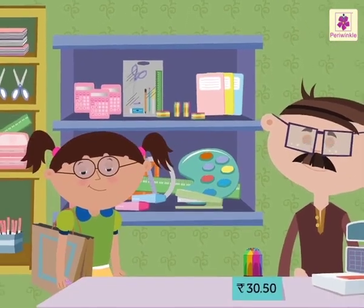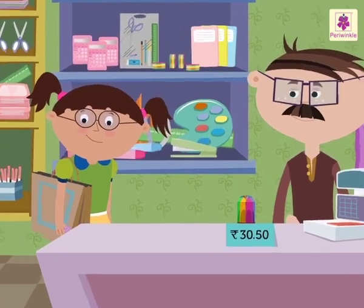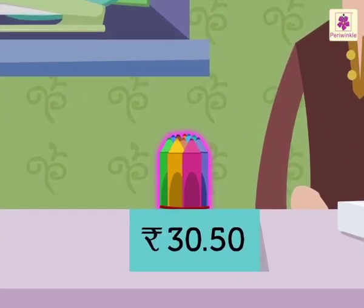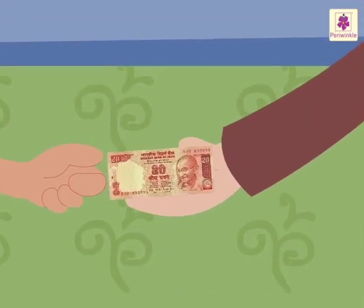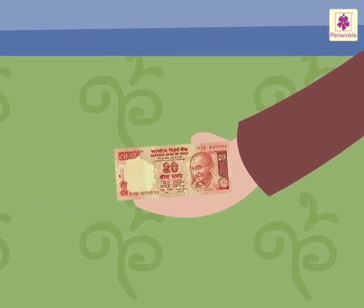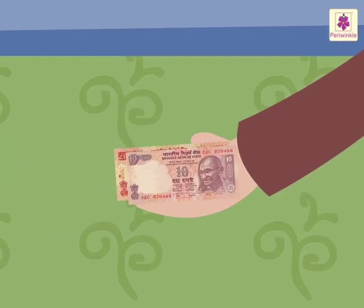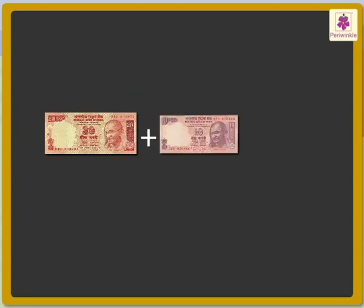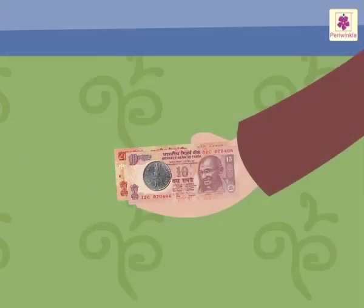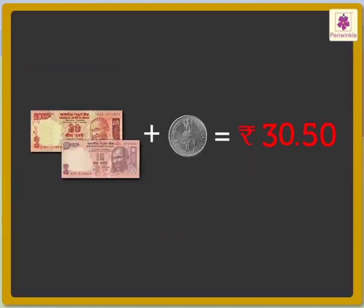Now, Saira goes to a stationery shop. She wants to buy crayons. The cost of the crayons is 30 rupees 50 paisa. Saira gives the shopkeeper a 20 rupee note and a 10 rupee note, as 20 plus 10 is equal to 30. She also gives one 50 paisa coin. It means she gave 30 rupees and 50 paisa to the shopkeeper.